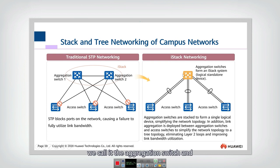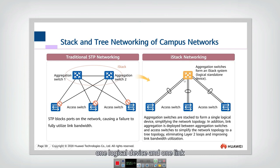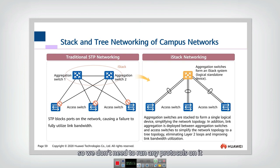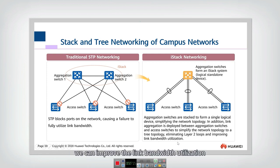The idea of ISTAC is to aggregate multiple physical switches into a logical switch, making them a logical standalone device. Multiple links, such as these two links, are aggregated together as a logical link. The switches are aggregated as one logical device, and the links become logical links. If we look at this topology, we can think of it as a non-loop topology, so we don't need to run any protocols to eliminate the layer two loop problem. By using ISTAC, we can solve the layer two loop problem and improve link bandwidth utilization, since we can now use two links in aggregation instead of one.